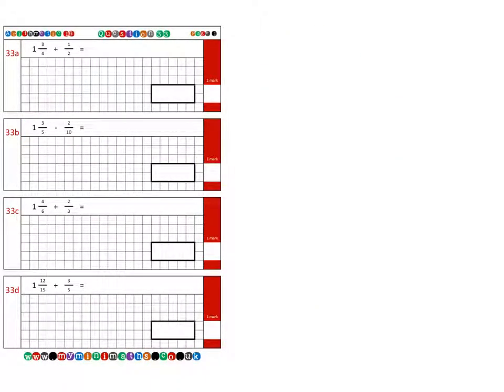Next is question 33c, which is 1 and 4 sixths. And we're adding 2 thirds to that. Again, we'll put this 1 to one side for now, this whole number. And we're going to just focus on adding the two fractions. We need to find a common denominator for these two here.